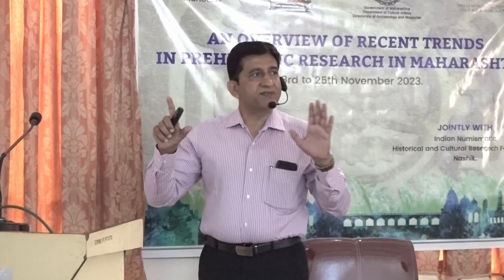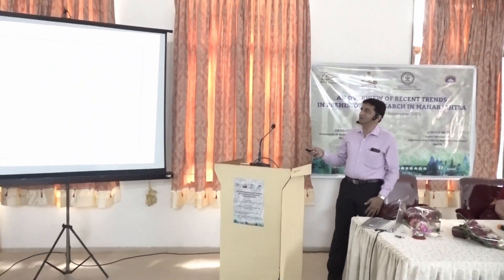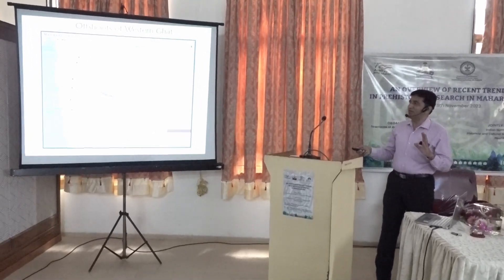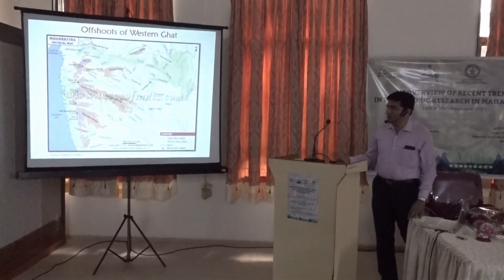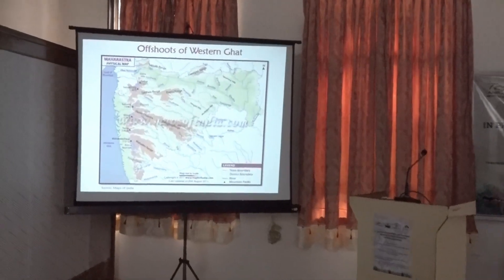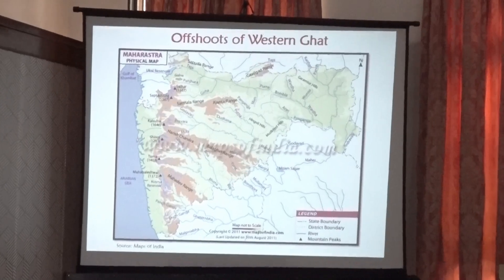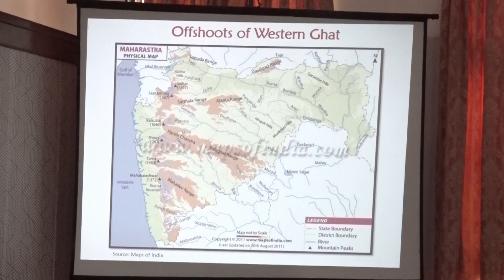The Western Ghats has several offshoots. To the north we have the Satmala range, starting from Saptashringi, and because Ajanta is located on this range we call it the Satmala-Ajanta range. The second is the Harishchandragad range, and to the south we have the Mahadev range. The Satpuda and Gavilgad ranges are not offshoots of the Western Ghats — Satpuda is different and Gavilgad is part of the Satpuda range.